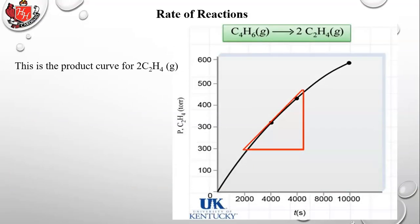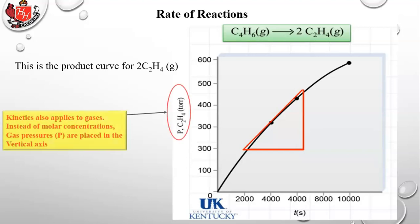This is the product curve for 2C₂H₄, converting from C₄H₆ to C₂H₄. Kinetics also applies to gases — instead of molar concentrations, gas pressures are placed on the vertical axis, but everything is exactly the same as with concentrations in how you measure and read it.